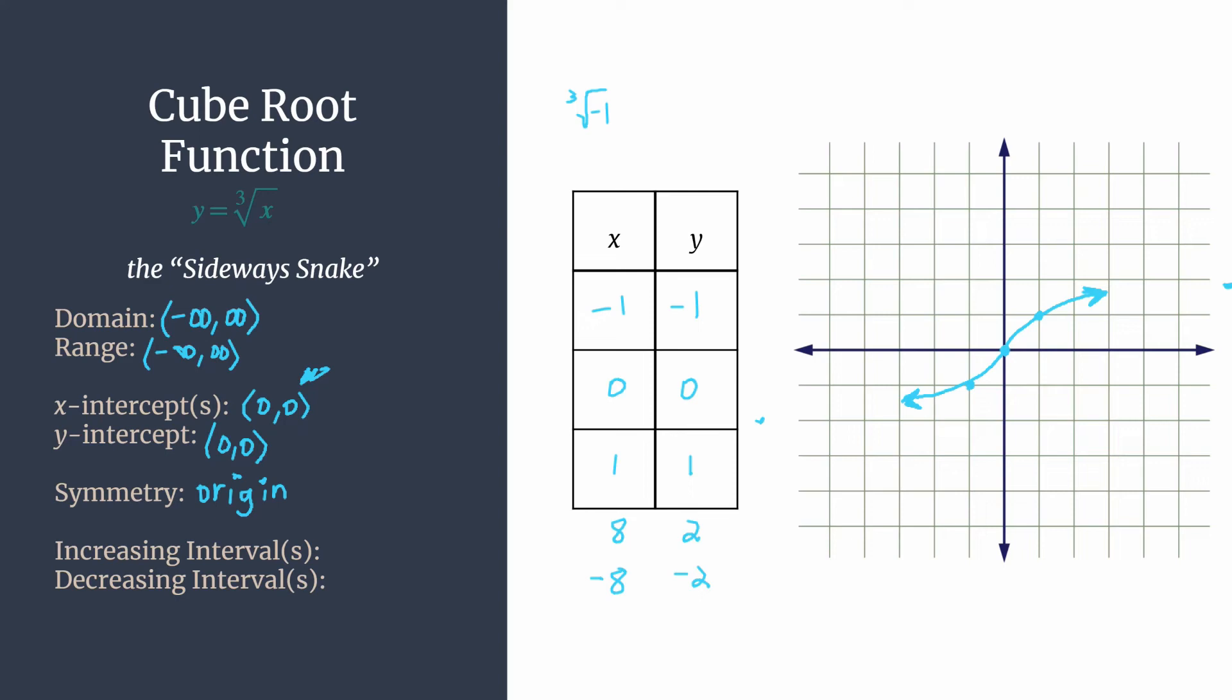And you can also look at specific examples from our table that further confirm this type of symmetry. So we see the point one, one is on the graph, as is the point negative one, negative one. Same thing happens with eight, two and negative eight, negative two.